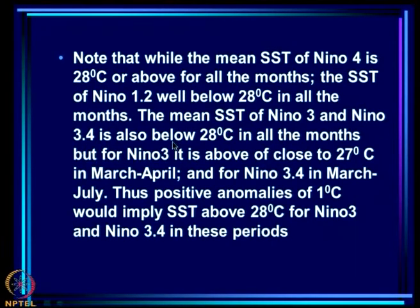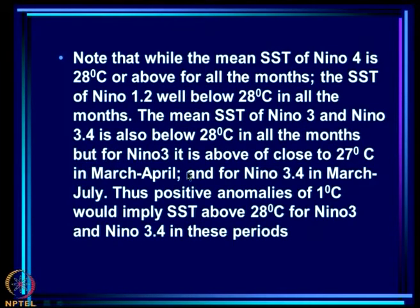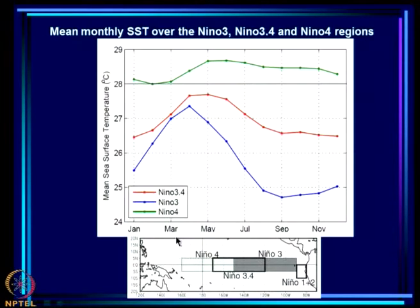The mean SST of Niño 4 is 28°C or above for all months. The SST of Niño 1+2, off the coast of South America, is well below 28° in all months. The mean SST of Niño 3 and Niño 3.4 is also below 28° in all months, but for Niño 3 it is above or close to 27° in March–April, and for Niño 3.4 it is above 27° from March to July. Thus, positive anomalies of about 1°C would imply SST above 28° — above the threshold for convection — for Niño 3 and Niño 3.4 in those periods.